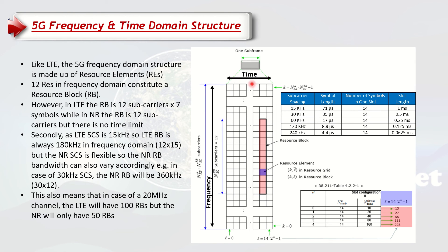In the time domain, subcarrier spacing and symbol length are inversely proportional — increasing subcarrier spacing reduces symbol length. In LTE at 15 kHz the symbol length was 71 microseconds. When expanded to 30 kHz in 5G the symbol length halves to around 35 microseconds. At 240 kHz the symbol length reduces further to about 4.4 microseconds — the symbol length decreases by the same multiple as the frequency increases.